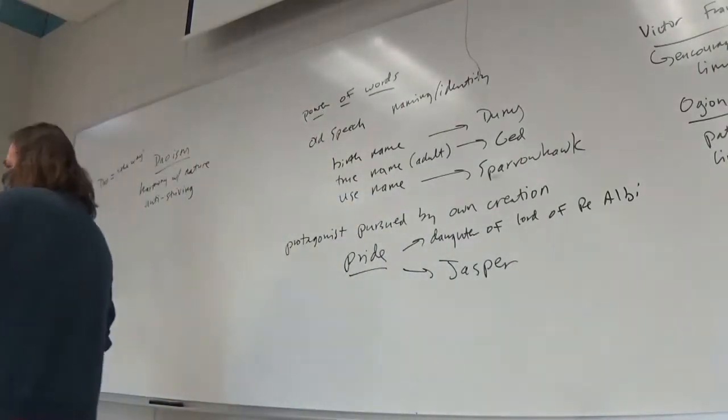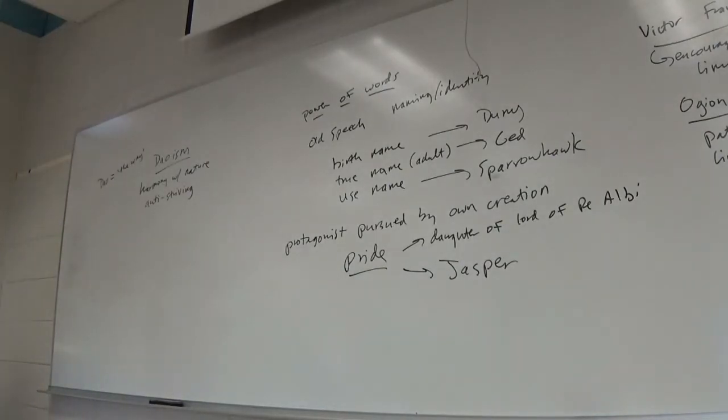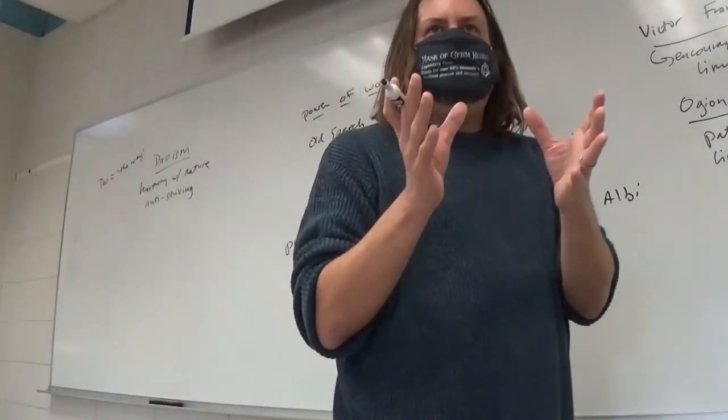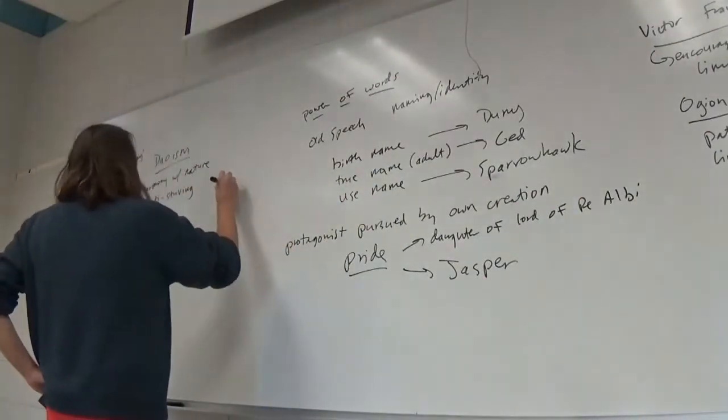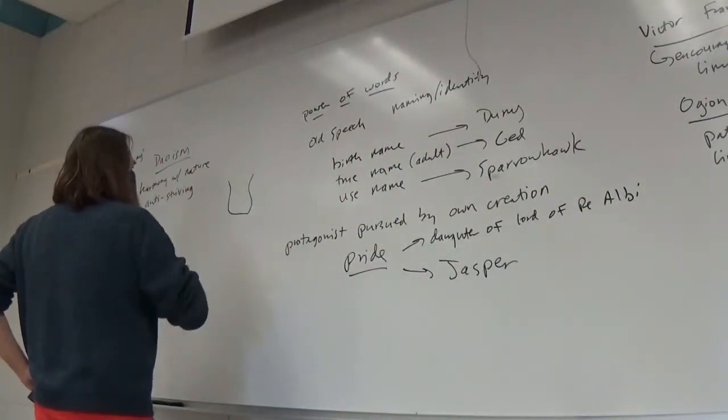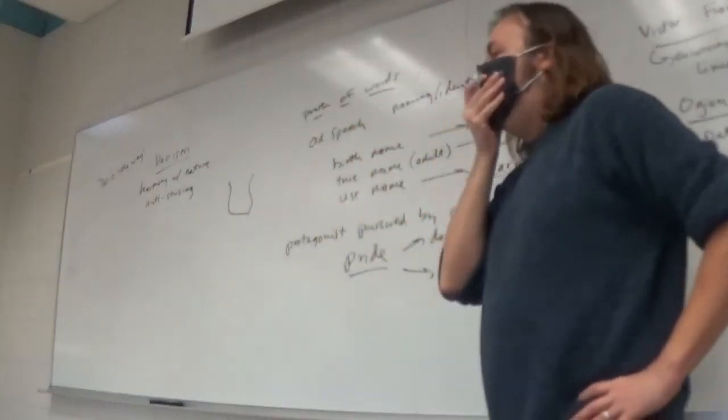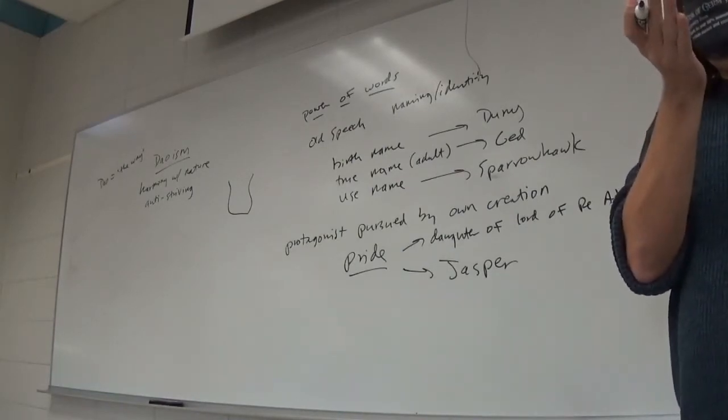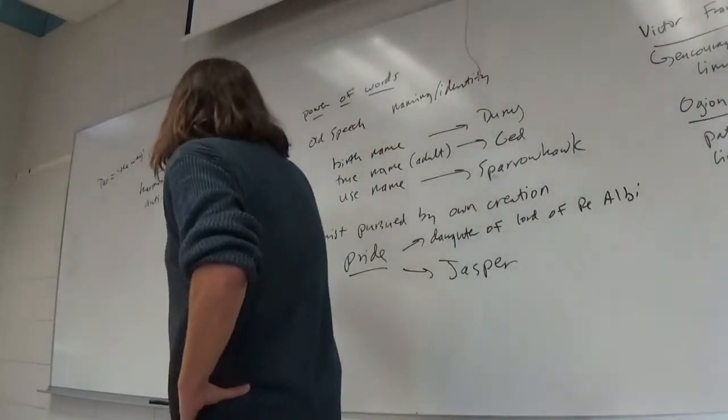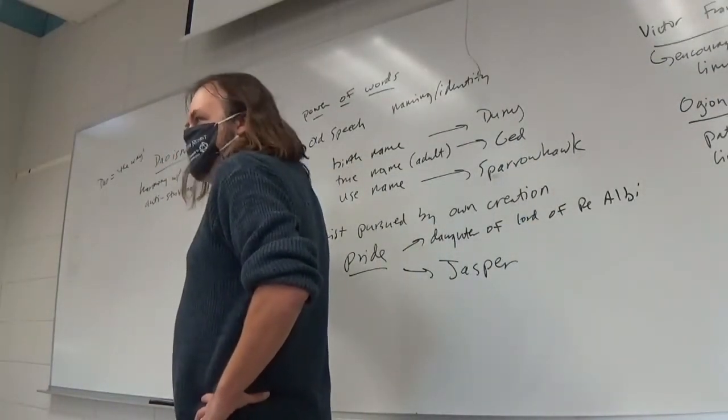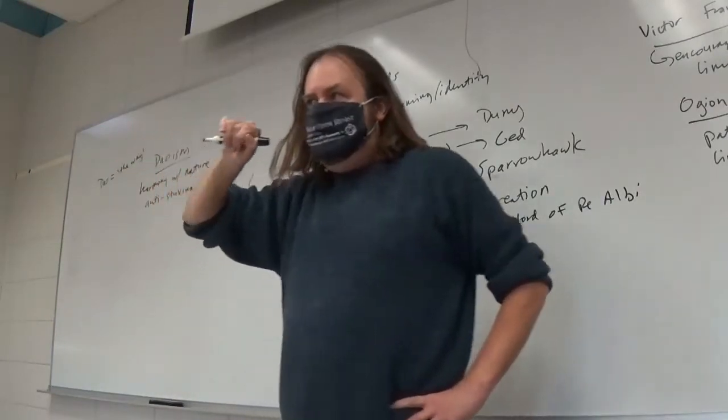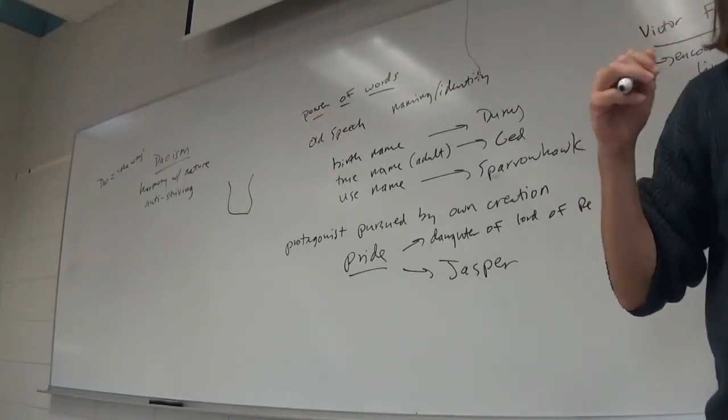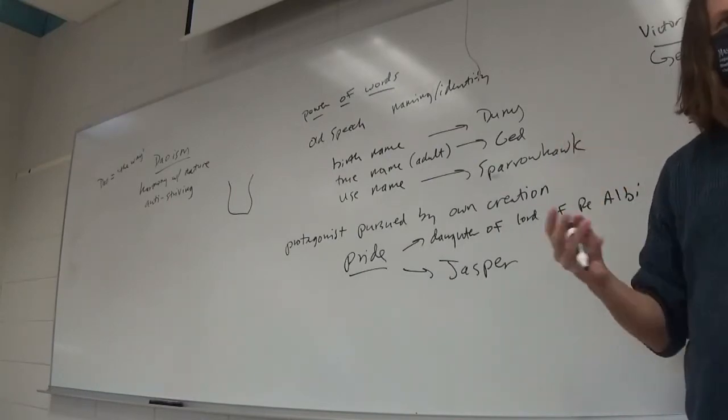That one of the most common Taoist metaphors for following the way is an empty jar, right? So, typically, right, we see an empty jar. So, and what do we think about? Putting things in. Yeah, what can I put in that, right? What can I fill it with? To the Taoist, the empty space is what's most important. Because what that is, is potential, right? That empty space is potential energy. So, by maintaining that emptiness, you keep that potential open, right?